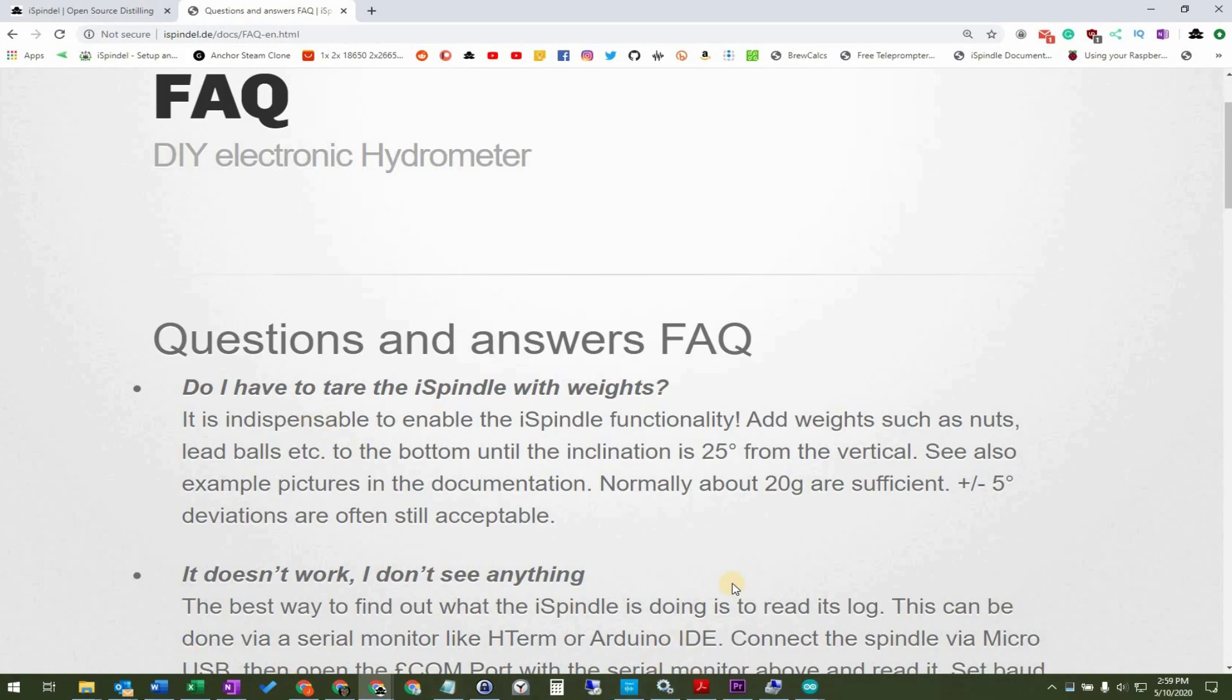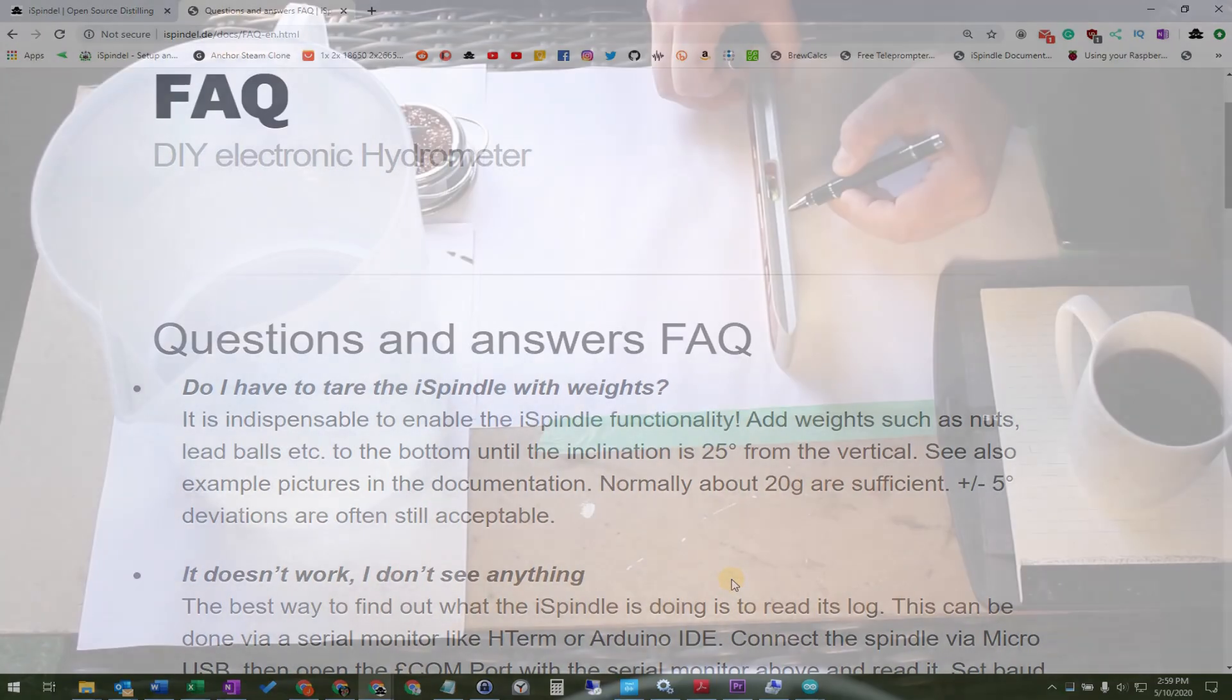Calibrating to 25 degrees is required, and usually a deviation of plus or minus 5 degrees tilt is often acceptable. That means, in order to calibrate, we should get the ice spindle between 20 to 30 degrees in pure water.